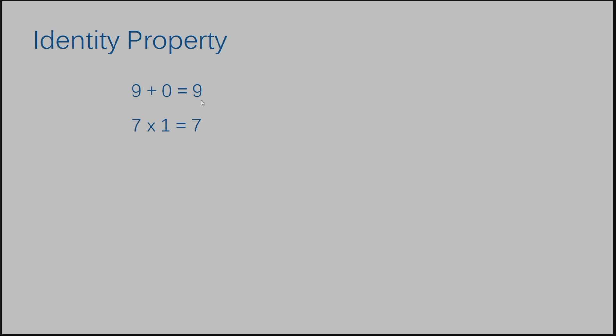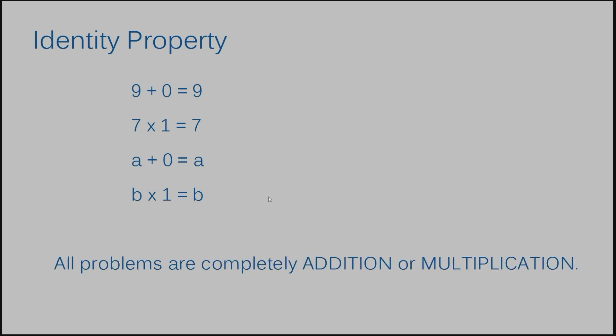So 9 plus 0 equals 9, and 7 times 1 equals 7. We also have a plus 0 equals a, and b times 1 still equals b — this works for variables too. These properties only work if the problem is entirely addition or entirely multiplication. Don't try to apply these rules to an example that has subtraction or division — you are not going to get your answer right. Only addition and only multiplication.